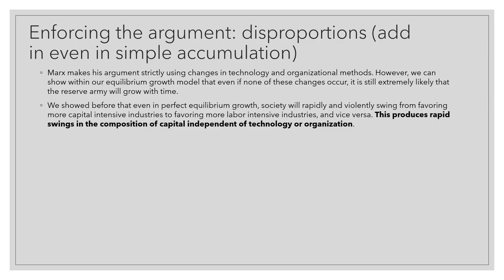What we can do next is add to Marx's argument. What we've done so far is summarize Marx's argument, which is a technological argument for a growing reserve army. Marx's argument is centered around a growing composition of capital as a result of technological and organizational changes. However, we can add a whole other reason for a growing reserve army — swings in the composition of capital independently of technology or organization — by completing what Marx was doing in volume two with disproportionality.